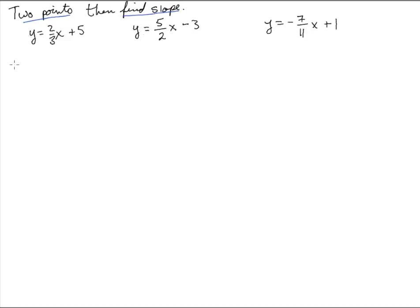So here we go — we're going to do this little x-y plot thing. What's the nicest, easiest value to plug in? Zero. You stick in zero there and you get y equals — that term goes away — and you get five. So the point is zero, five. That's a nice easy point.